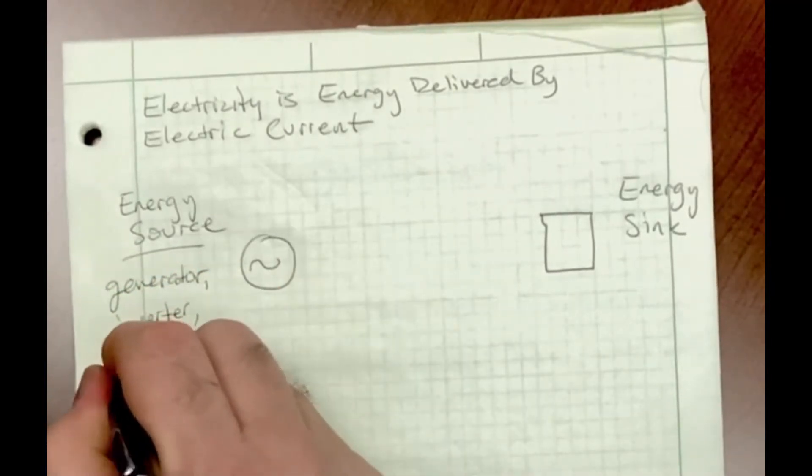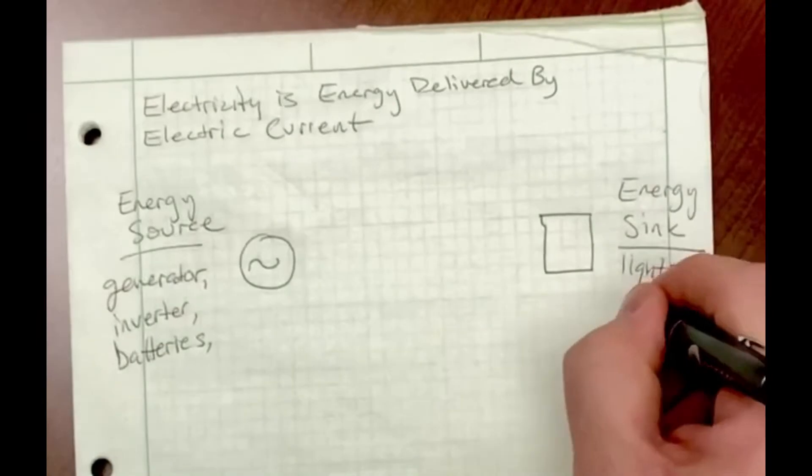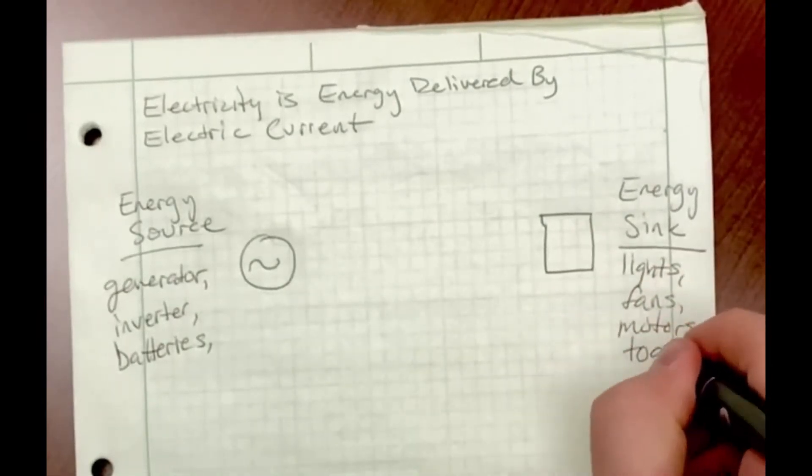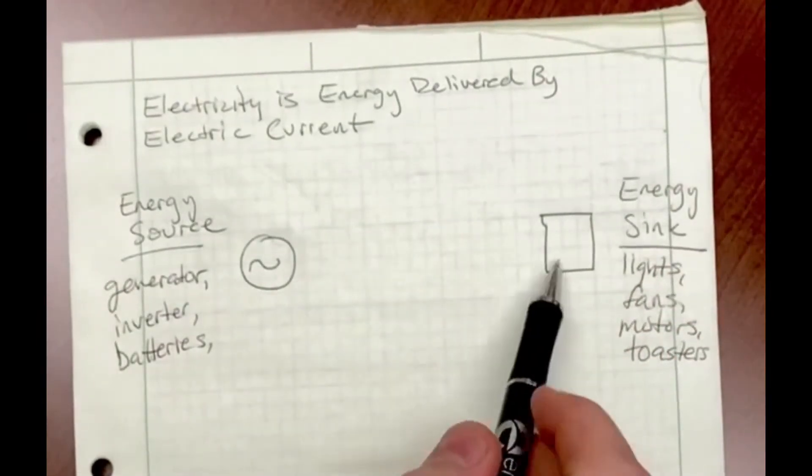Examples of energy sources would be generators, inverters, or batteries. Examples of energy sinks would be things that consume energy like lights, fans, motors, and toasters.